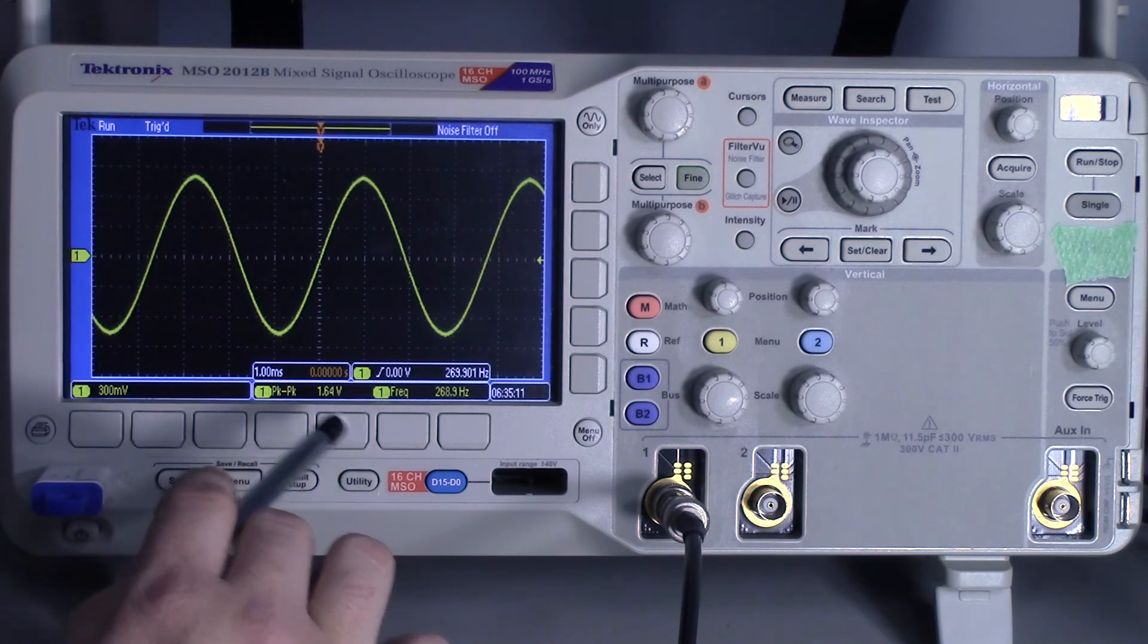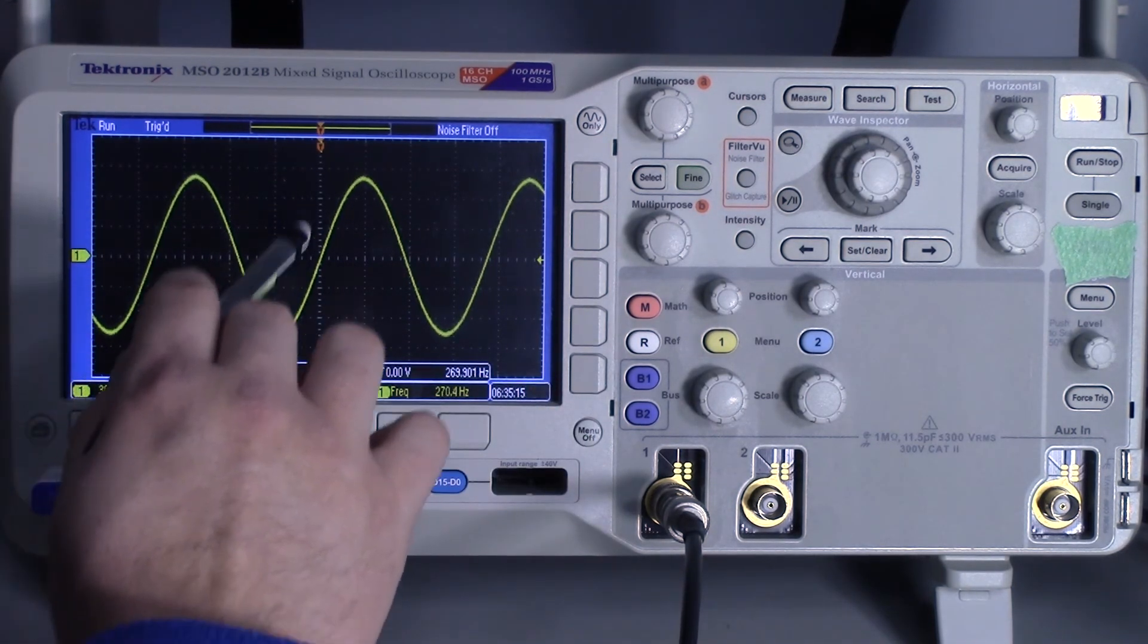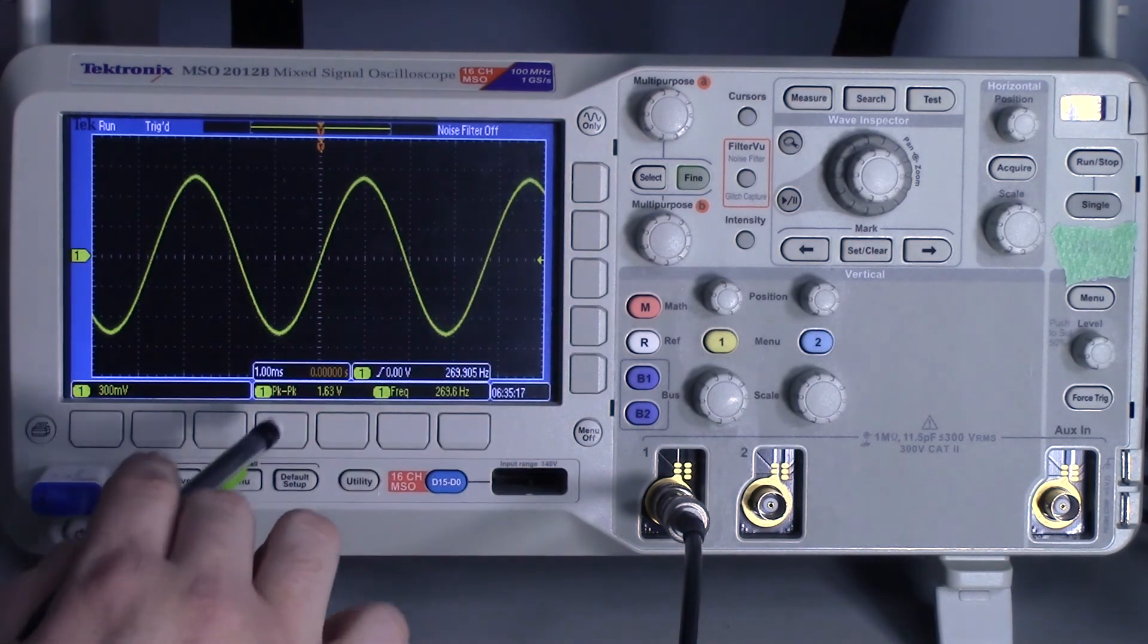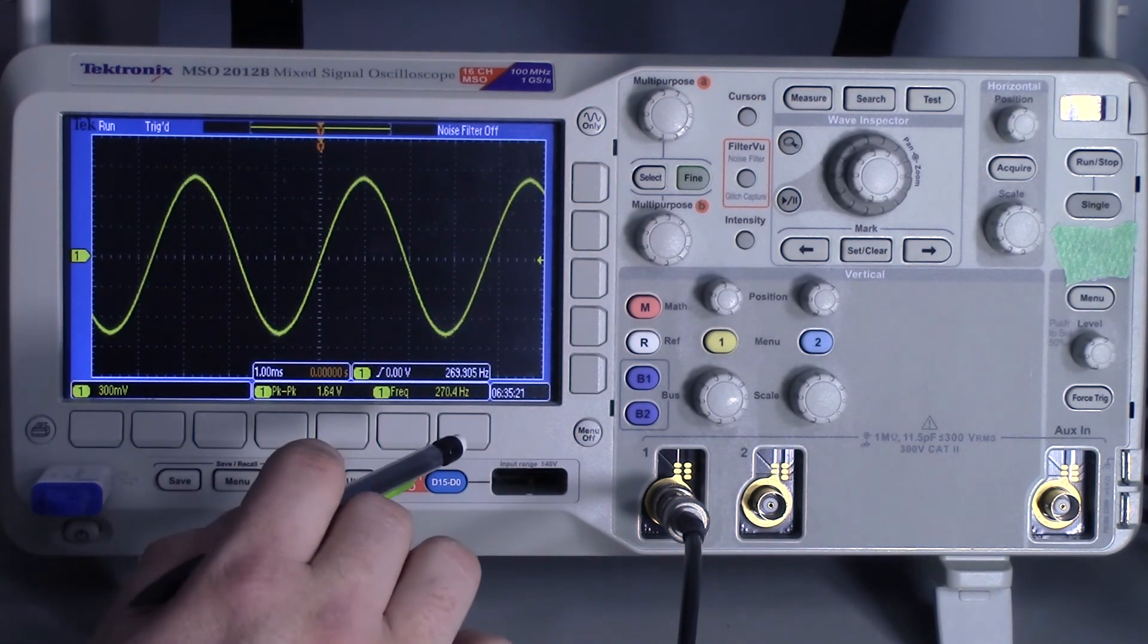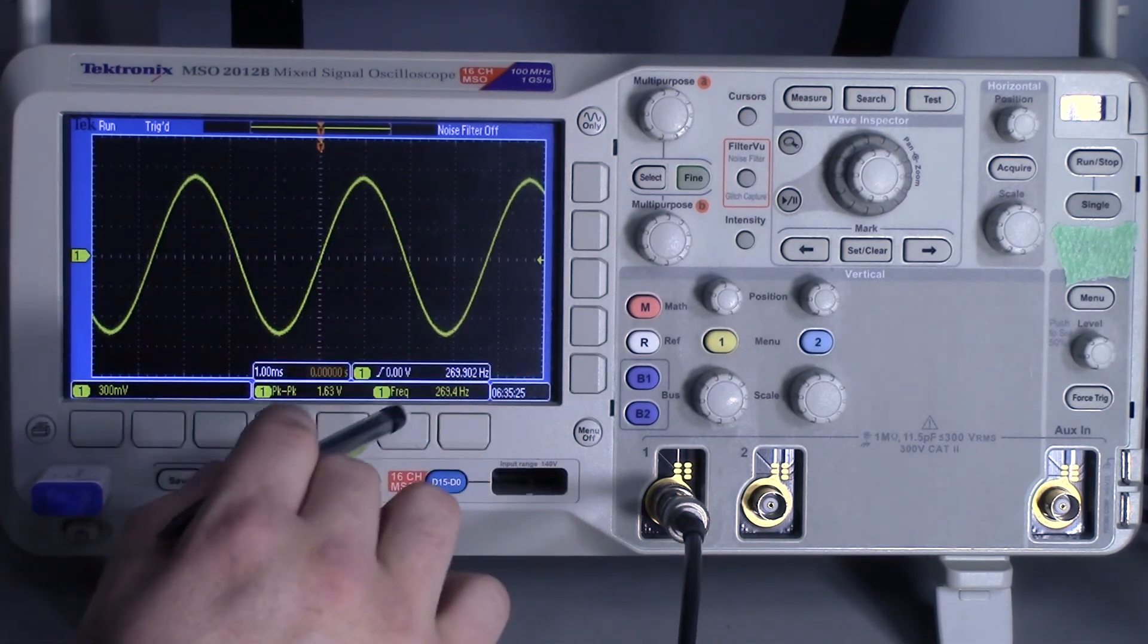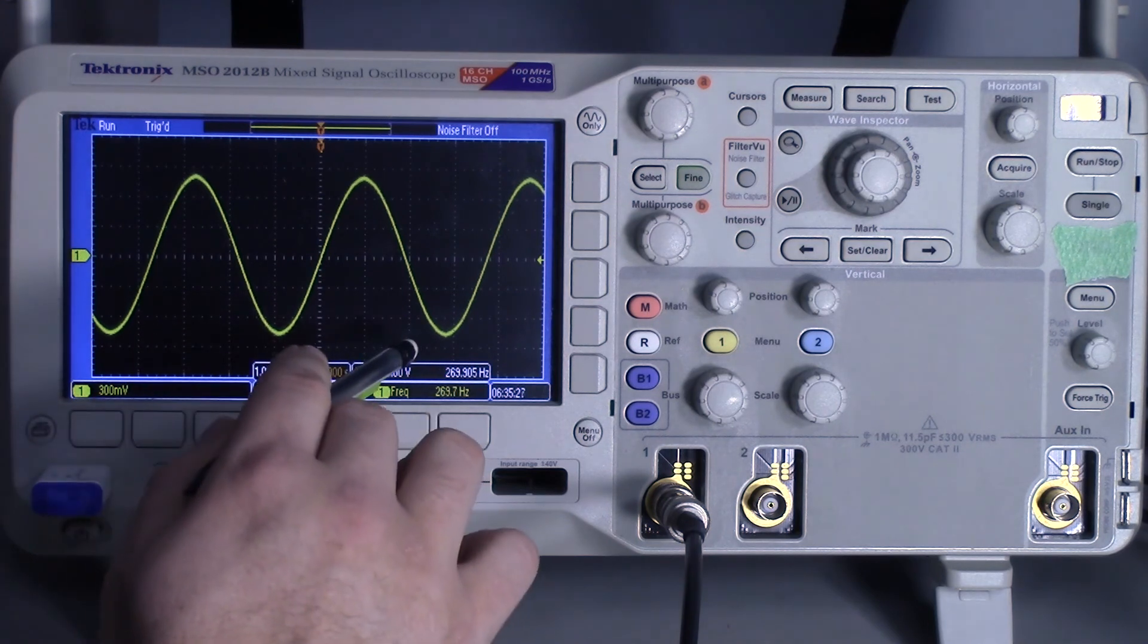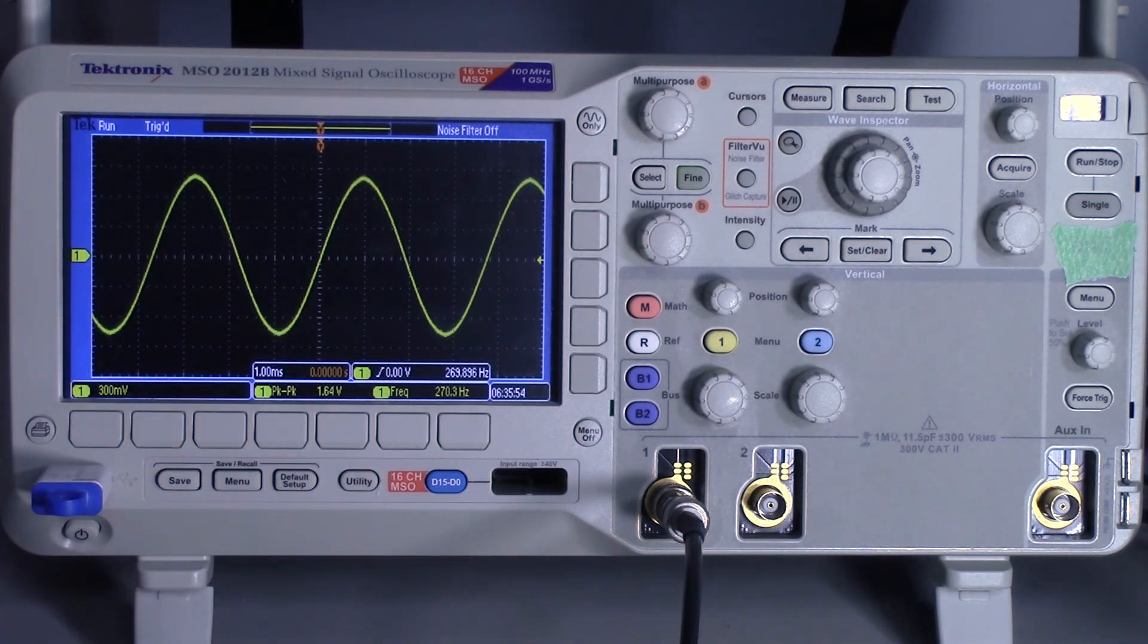This will tend to work best when you have a nice, smooth, repeating waveform. If you have something that's kind of noisy, the measurements that it tells you is not going to be true. So in that case, if this signal had a bunch of noise on it, maybe you want to actually just use the cursors to get a little bit more precise measurement.